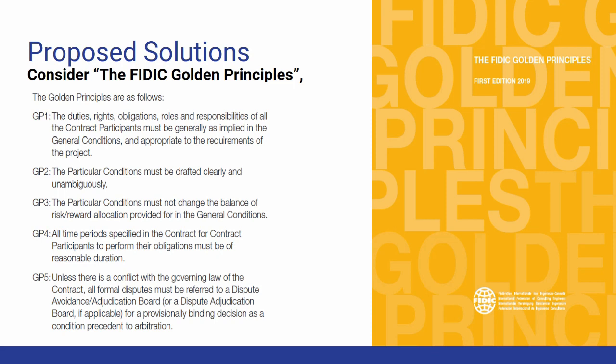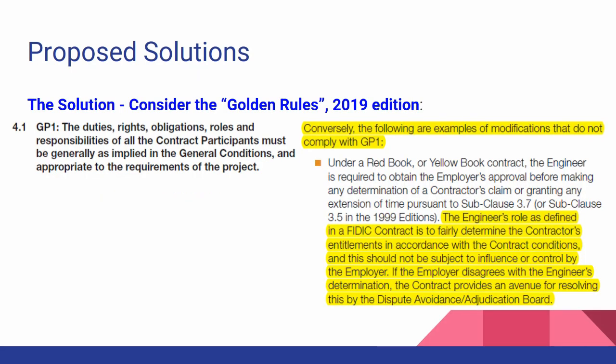The first of the five golden principles — the one relevant to this presentation — is that the duties, rights, obligations, roles, and responsibilities of all contract participants must be generally as implied in the general conditions. Regarding the engineer, this means his role to act fairly or neutrally between the parties must be maintained. The particular conditions cannot remove this role or impose obligations not intended by the general conditions. The engineer's role as defined in the FIDIC contract is to fairly determine disputes and must not be subject to influence or control by the employer.